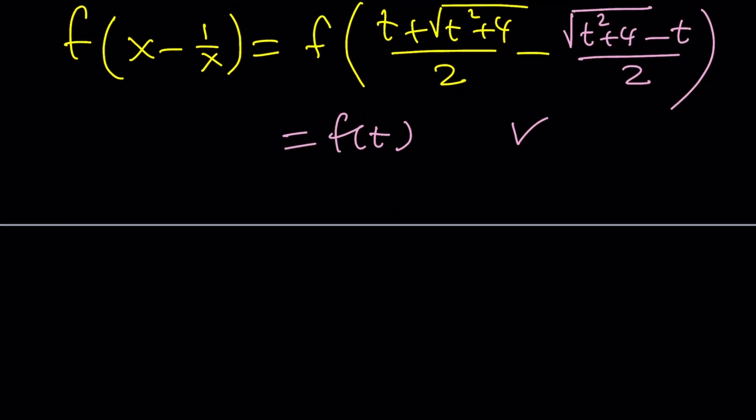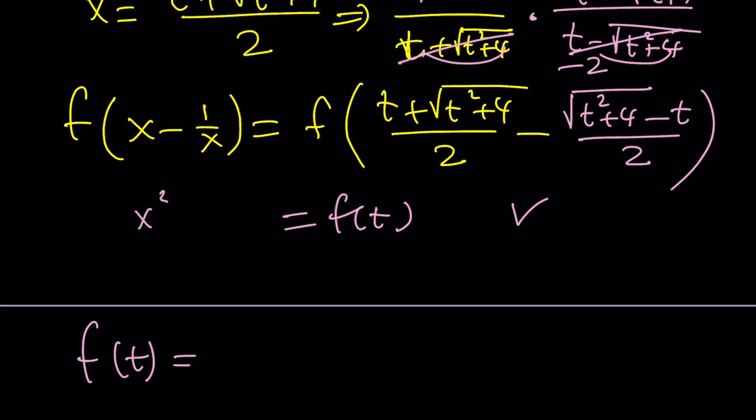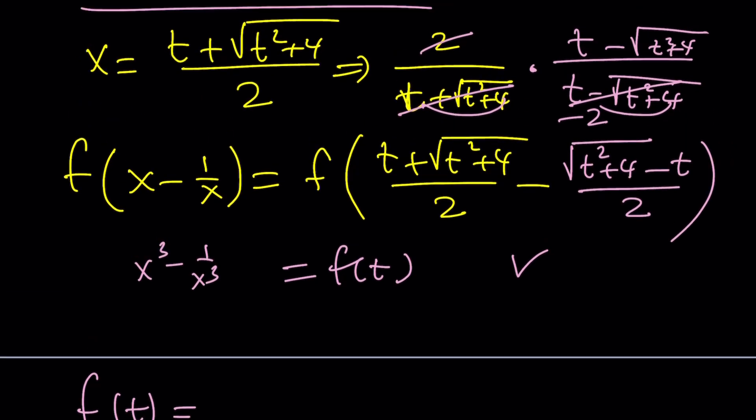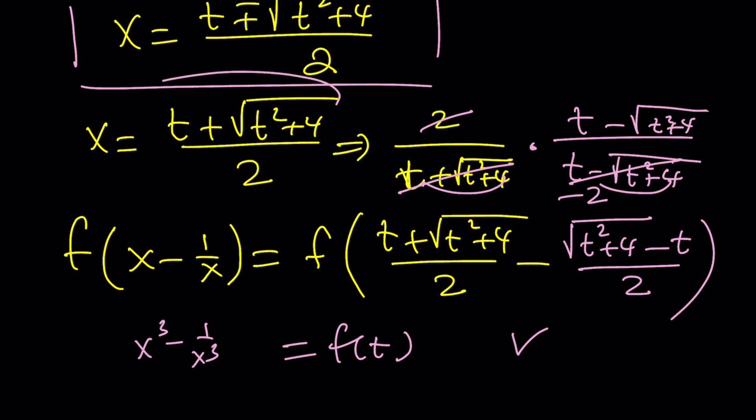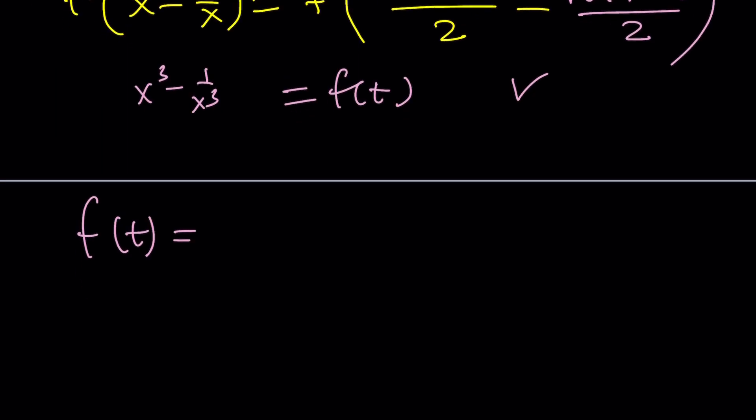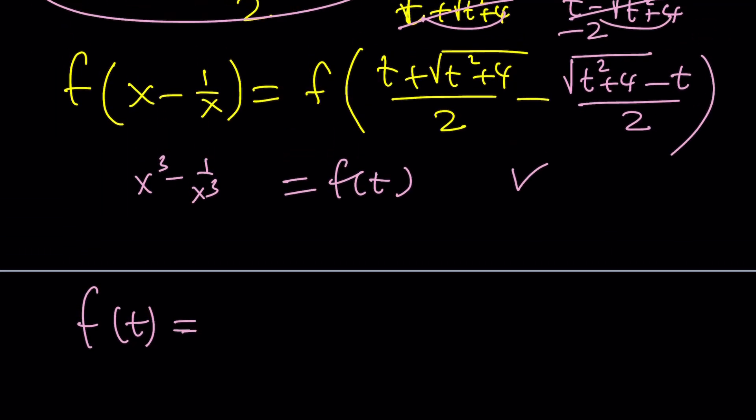So, let's go ahead and use this on the right-hand side. So, we know that we're going to get f of t from the left. And on the right-hand side, remember, we had x cubed minus 1 over x cubed. And we're replacing x with that, right? And we're using this, actually. So, it's going to be t plus the square root of t squared plus 4 over 2 cubed minus 1 over x cubed.